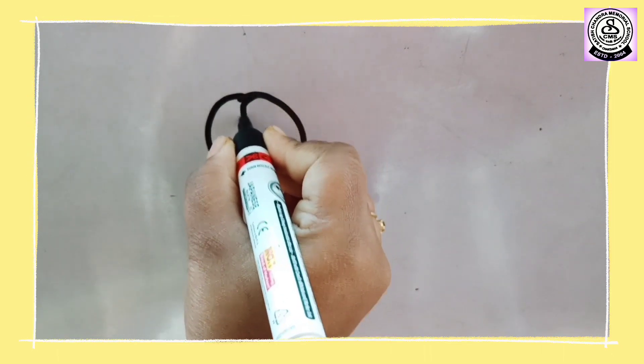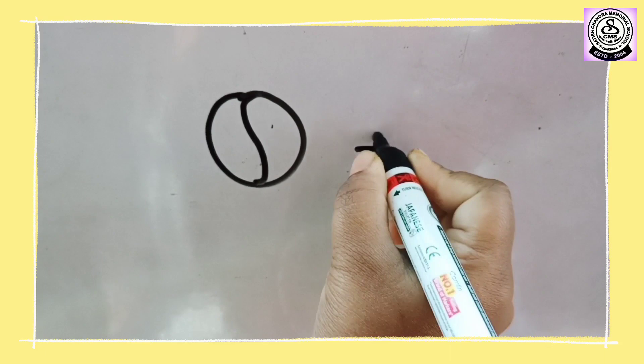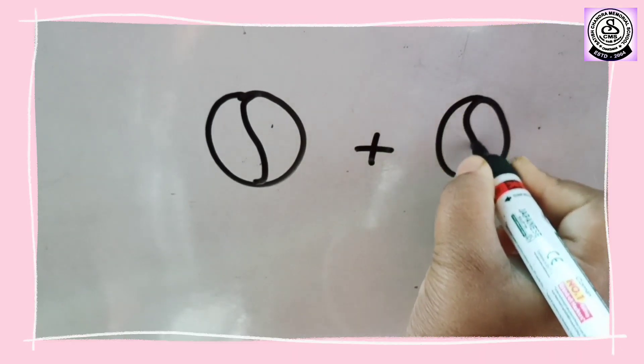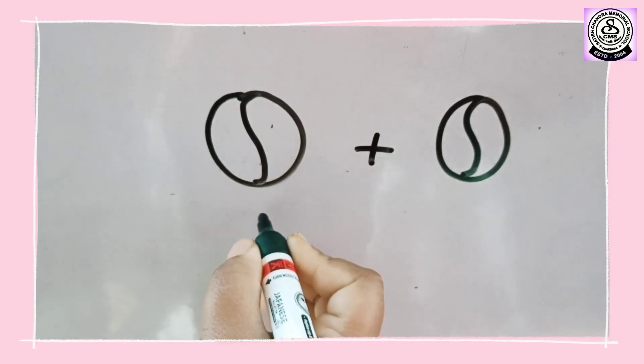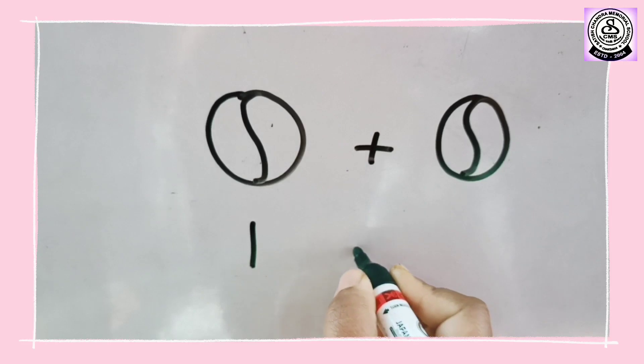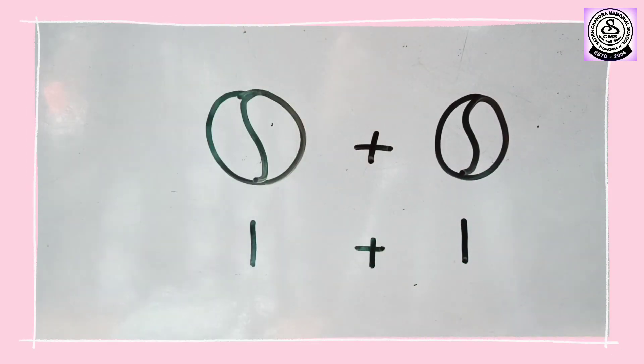So here I am drawing a ball. Plus, let me draw another ball here. So now how will we write this? So how many ball is here? 1. So 1 plus how many ball here? 1. Now let's see another example.